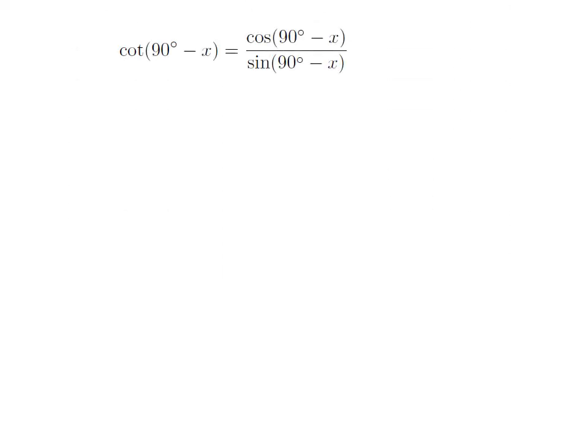As we know, cot theta is equal to cosine of theta divided by sine of theta. So, cot(90° - x) is equal to cosine of (90° - x) divided by sine of (90° - x).